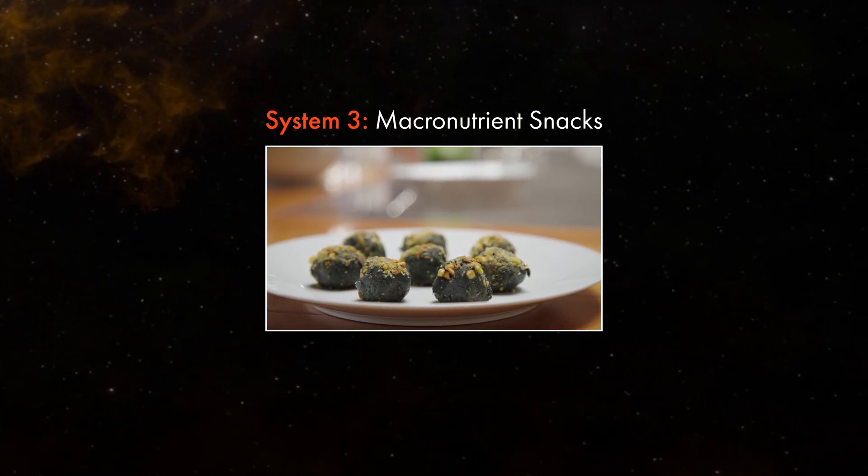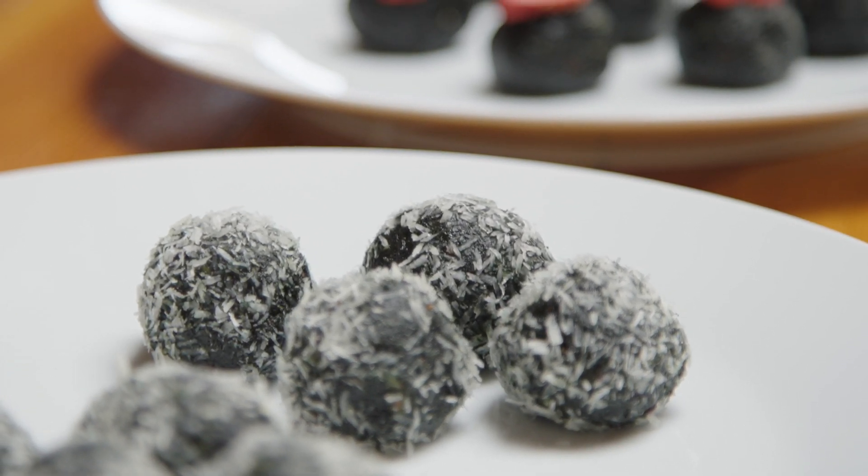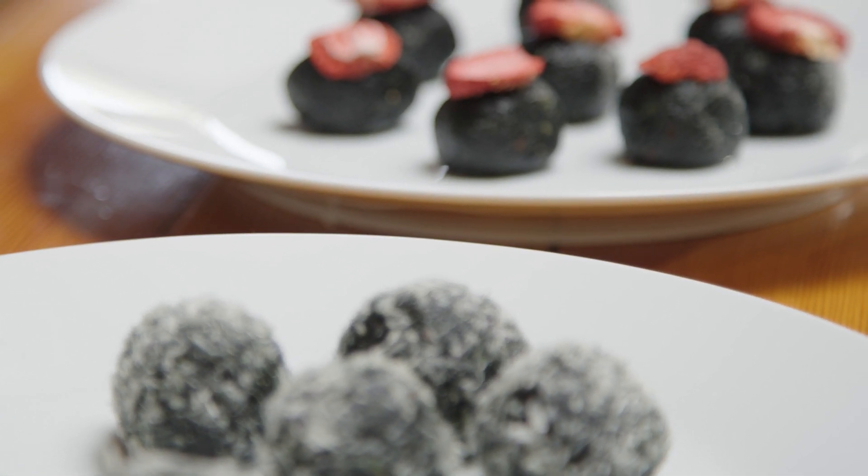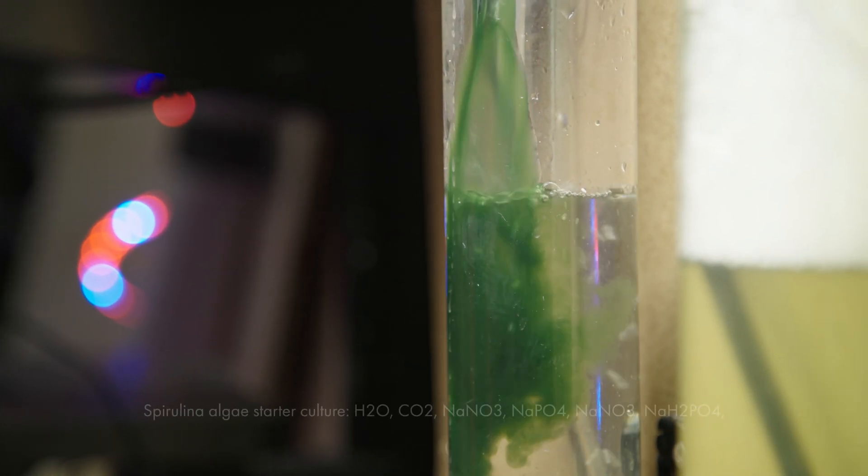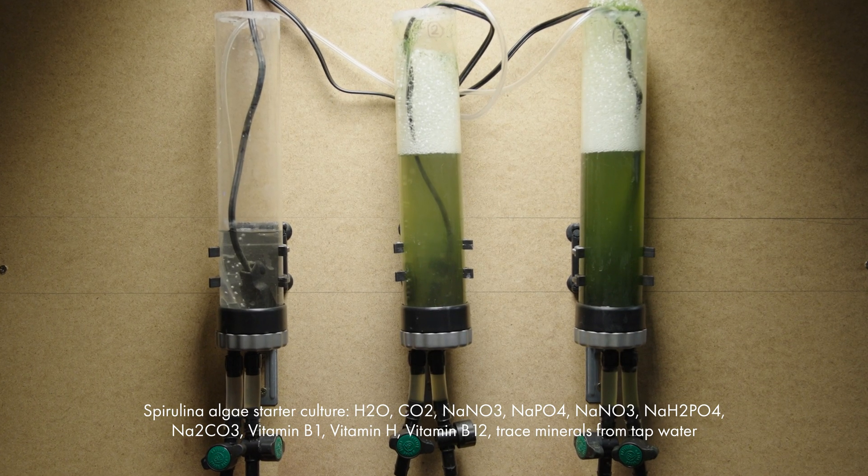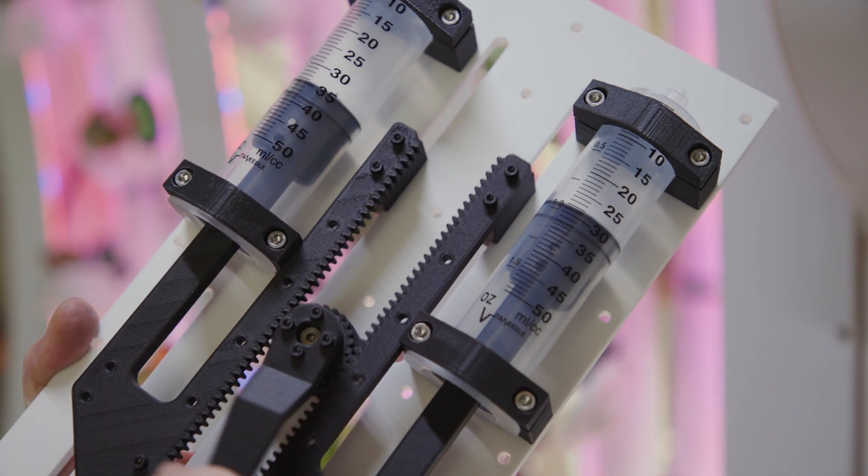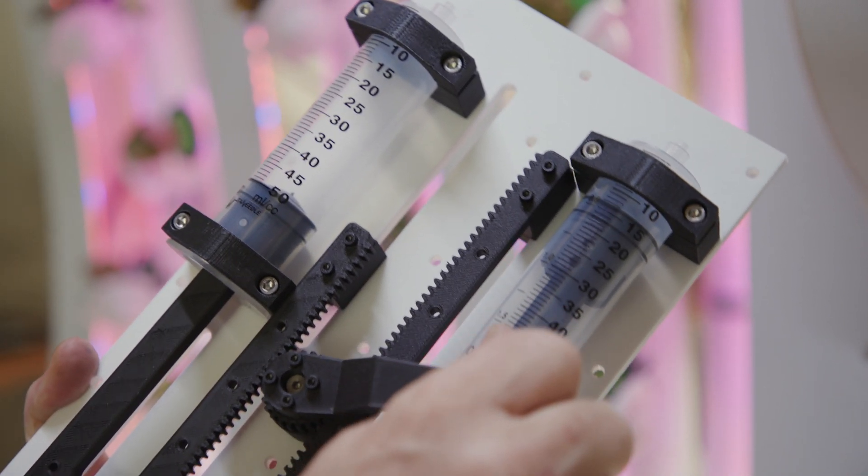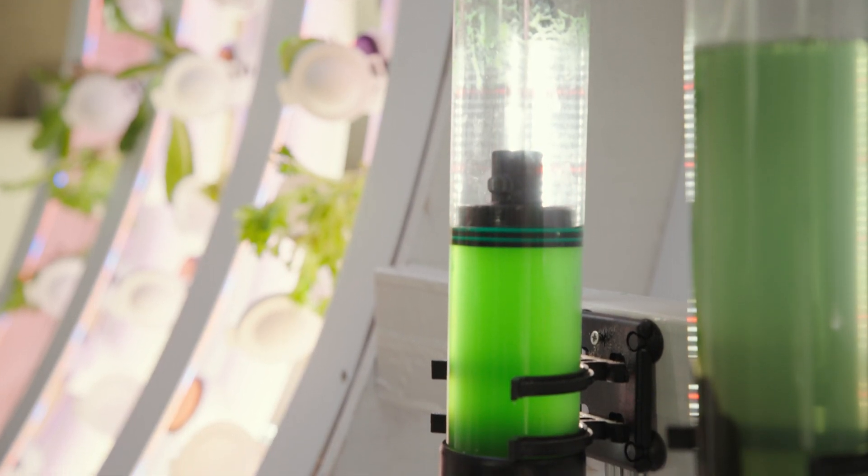System 3, macronutrient snacks. Protecting your body's cells from the extreme environment of space can start with tasty algae bites. We have created a bioreactor that grows microalgae in a mixture of water, carbon dioxide, salt and nutrients. To harvest the biomass easily, a custom mechanism removes algae and adds nutrients and fresh water for the next batch.